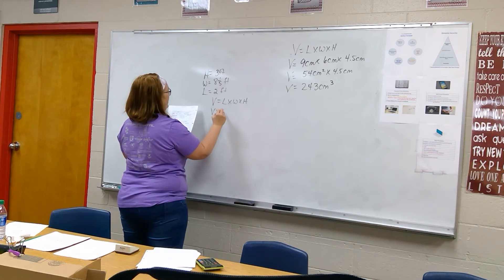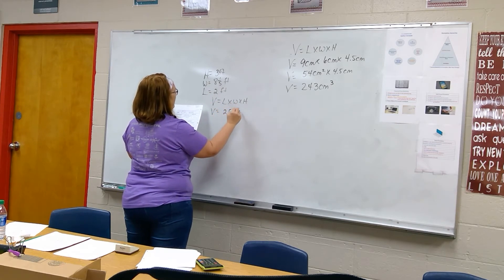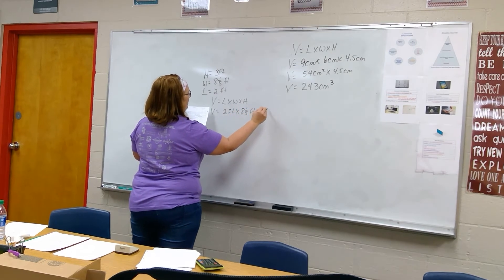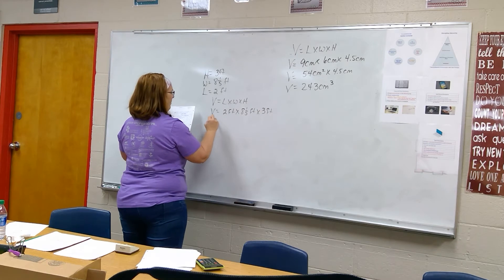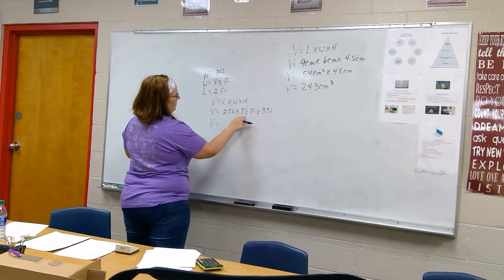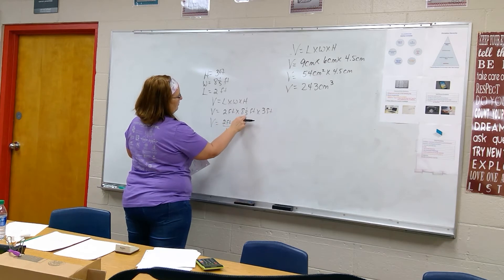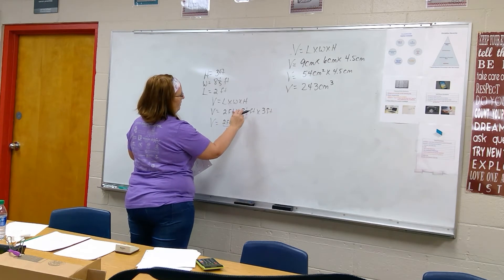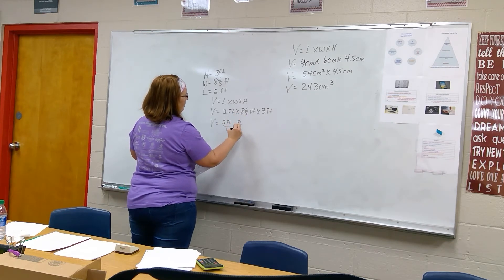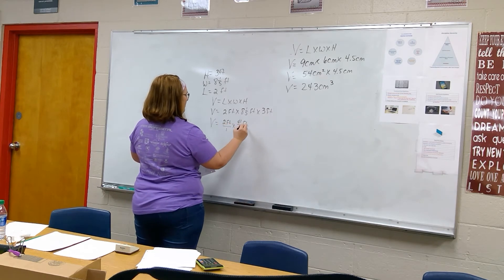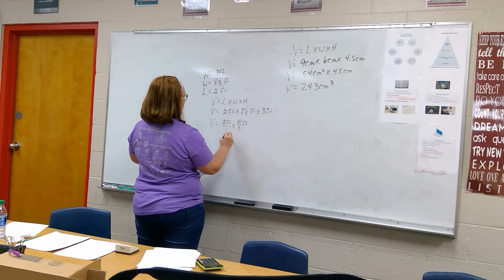So now you can plug it in. Volume equals length times width times height, three feet. Volume equals length two feet times height three feet. Volume equals turn it into an improper fraction, two feet times five times eight is 40 plus 1, 41 over five feet, two times 41 feet, two times 41 is 82 feet squared.